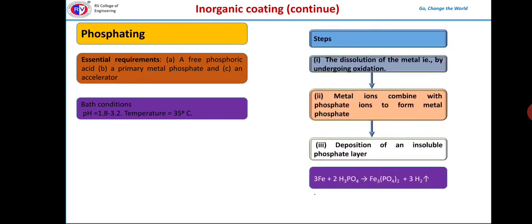This process involves the following steps. In the first step, the metal undergoes oxidation; that is, dissolution of the metal takes place. In the next step, these metal ions will combine with the phosphate ions to form metal phosphates. In the last stage, these metal phosphates are deposited over the metal which acts as a barrier between the metal and the environment.